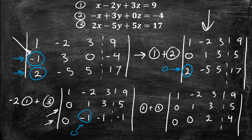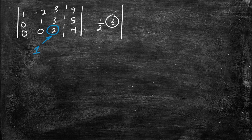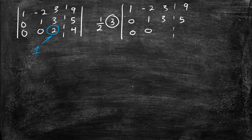Now let's go to the next step. What we want is to make the 2 in row 3 a 1, and we do that by dividing row 3 by 2 — that is, one half of row 3. Rows 1 and 2 stay the same: 1, negative 2, 3, 9 and 0, 1, 3, 5. Row 3 becomes 0, 0; 2 divided by 2 is 1; 4 divided by 2 is 2.